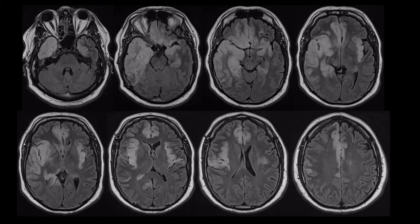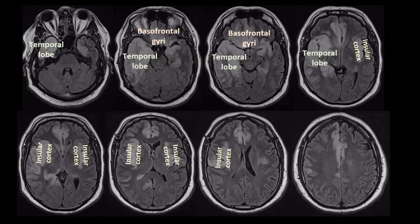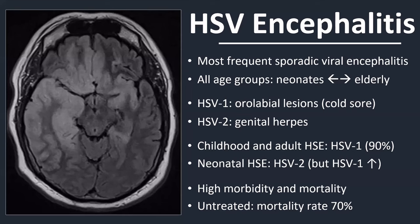These FLAIR images provide a nice overview of the total extent of the abnormalities. We once again see asymmetrical involvement of the temporal lobe, with the right temporal lobe more involved than the left. We see involvement of the basal frontal gyri, the insular cortex on both sides, as well as involvement of the cingulate gyrus. Typical distribution, and once again with sparing of the basal ganglia.